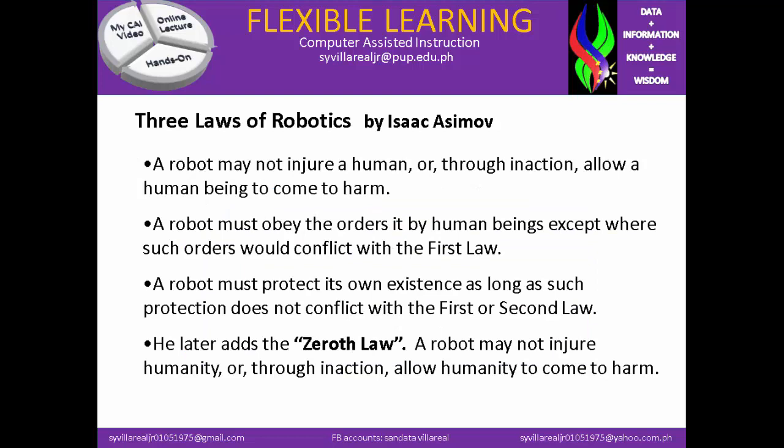Now let's move on to the three laws of robotics by Isaac Asimov. First: a robot may not injure a human or, through inaction, allow human beings to come to harm. Second: a robot must obey the orders given by human beings, except where such orders would conflict with the first law. Third: a robot must protect its own existence, as long as such protection does not conflict with the first and second law. He later adds the zeroth law: a robot may not injure humanity or, through inaction, allow humanity to come to harm.